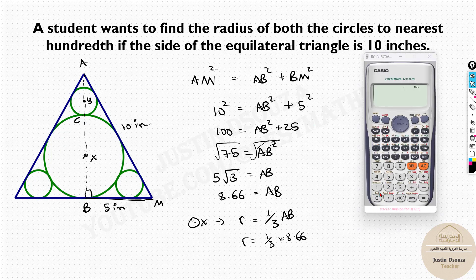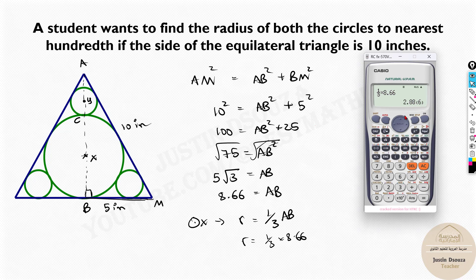So now we found R equals 1/3 of 8.66, that is 1/3 times 8.66. You get 2.886.